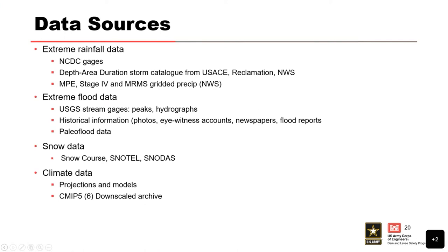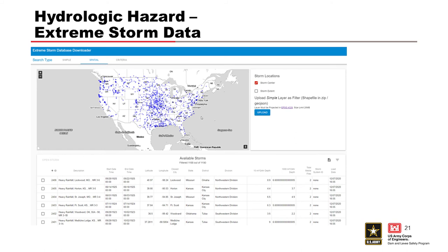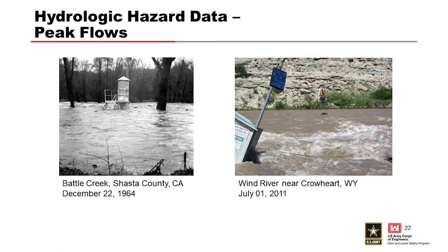The Army Corps has a database called the Extreme Storms Database with over 1,100 events. Currently it is only available internally, but it will be available to the public as well this year. In the right-hand picture there is a person in a cage crossing a cable during a flood event to take measurements, because the gauging station is looking a little crooked — probably not capturing good flood data anymore at that point. The left-hand image shows another type of USGS gauging station set up to capture measurements during large floods.